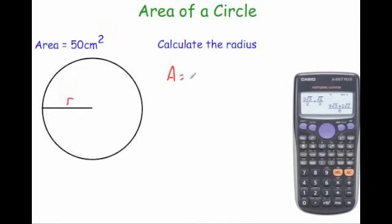So the area is pi r squared. So area equals pi r squared. So normally we would square it and times by pi. So if we wanted to work backwards, we would divide by pi and then square root it. So we're going to do 50 divided by pi.